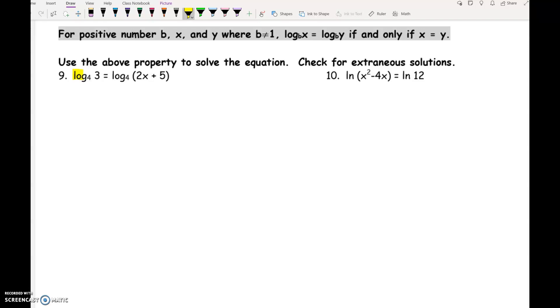If we've got log base 4 of 3 equals log base 4 of 2x plus 5, because the log base 4s are the same, the stuff inside the logs must also be the same. So on this one I would subtract 5 on both sides and divide by 2 to get negative 1 equals x.